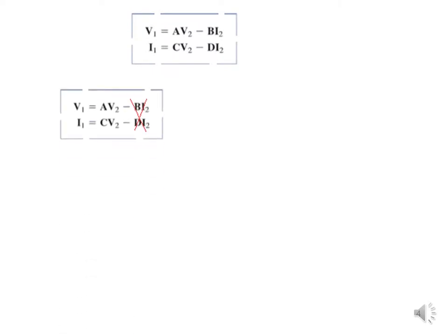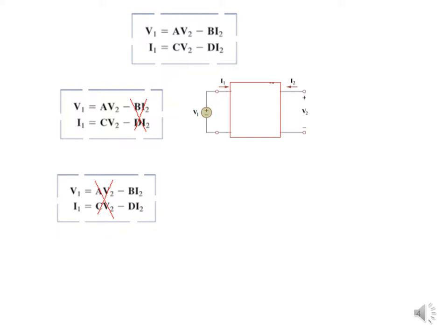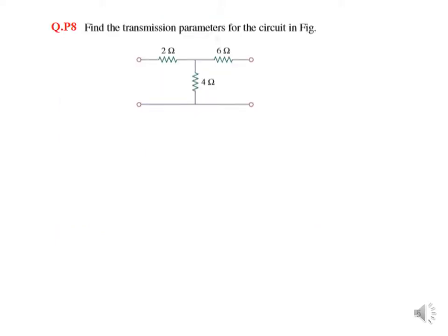The technique we will follow is: to find A and C, we set I2 equal to zero by open-circuiting the output terminal so no current flows. To find B and D, we set V2 equal to zero by short-circuiting the output terminal. These are the two techniques we will follow.